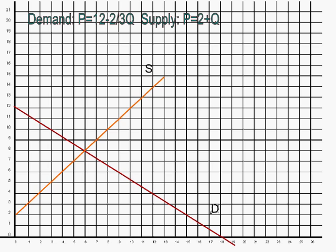We're back again, using another graphing program. We have our same demand and supply curves that we're familiar with: twelve minus two-thirds Q for the demand, and P equals two plus Q for supply. The equilibrium price would be eight and the equilibrium quantity would be six.